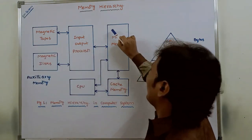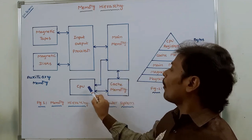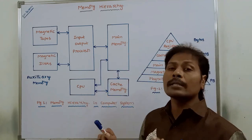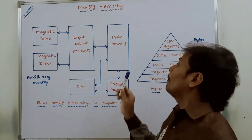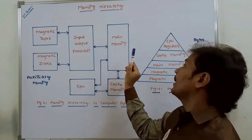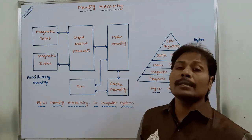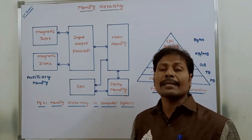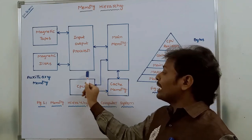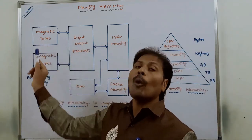Next one is main memory. The memory unit that communicates directly with the CPU can be called as main memory. Main memory occupies a central position in the memory hierarchy by being able to communicate with the CPU directly. Main memory is used for storing both the programs and the data that are needed by the CPU. Programs and data that are not needed by the CPU are transferred to auxiliary memory.